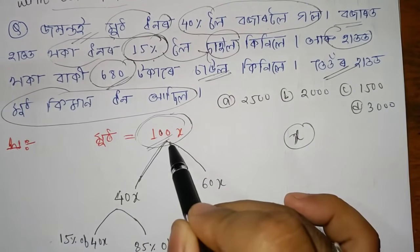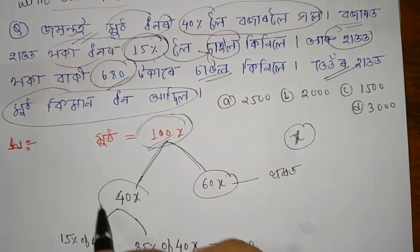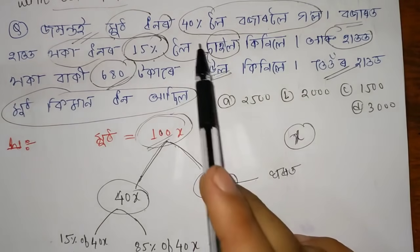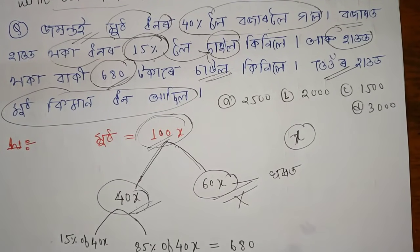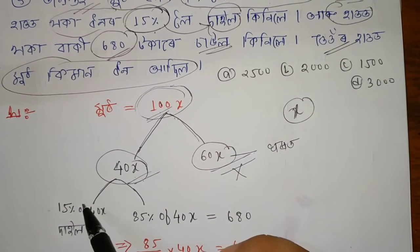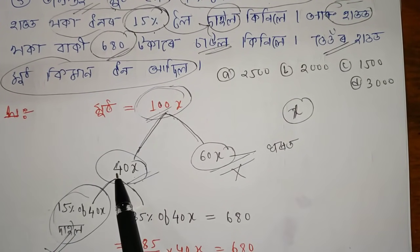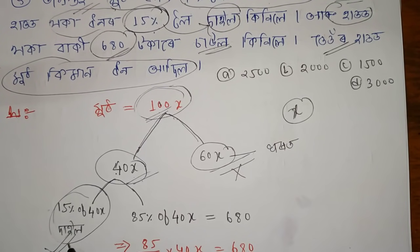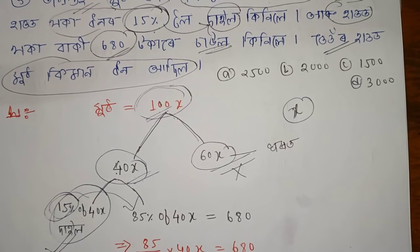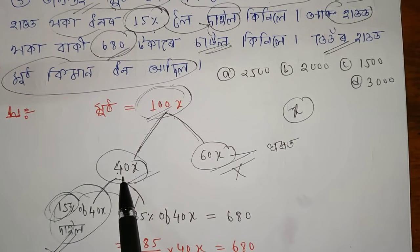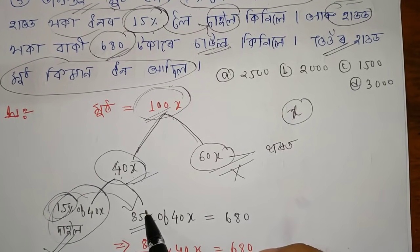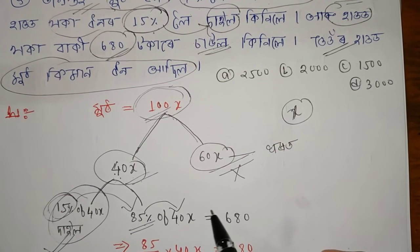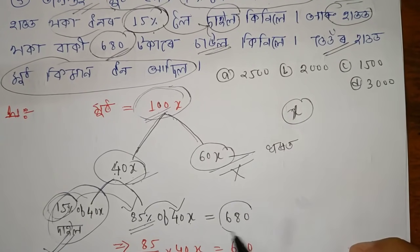Turn x to be the total. This is 100x. This is 60x. This is 40x. So if x is total, 40x is what he took to market, and 60x is what remained. This is 40x, this is 100x. This is 45x, this is 50x. It's 85%. Do you have any confusion? This is 40x. This is 50x. So 85% is 40x. How much is it? 680.